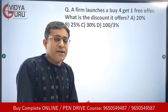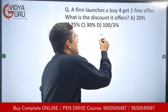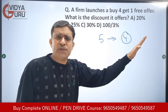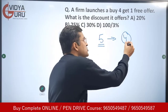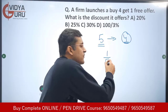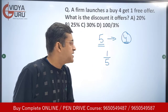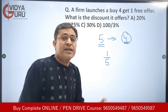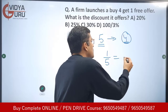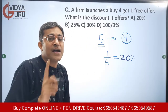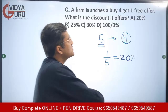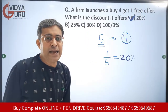Think of it like this: he is giving you five things in total but charging you for only four. That means one out of every five items is being given as free. One by five in percentage terms is 20 percent, so the discount is 20 percent — not 25 percent.